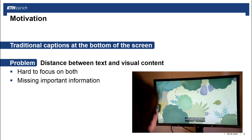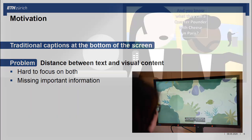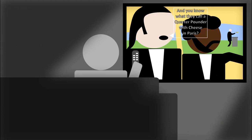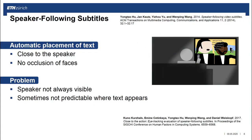One idea to reduce the distance between text and video content is to place captions close to the speaker, similar to speech bubbles in a comic. This technique is called speaker-following subtitles and has been presented some years ago. It performs an automatic detection of the speaking person and places text close to faces without occluding them.